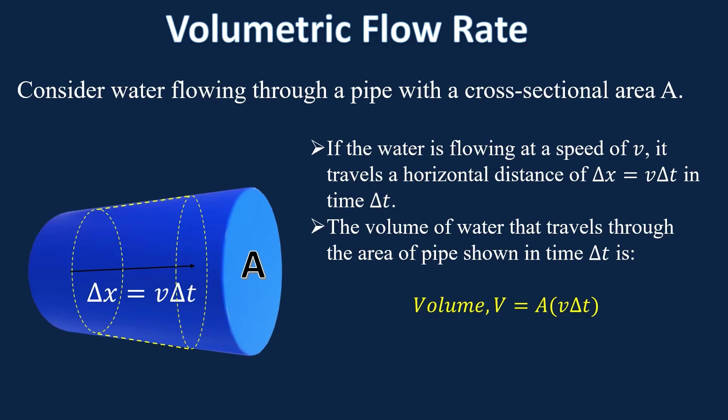That's the volume. We're looking for volumetric flow rate, so to get volumetric flow rate, we just divide by T. The volumetric flow rate V over T — also sometimes written as V prime — equals cross-sectional area times velocity.